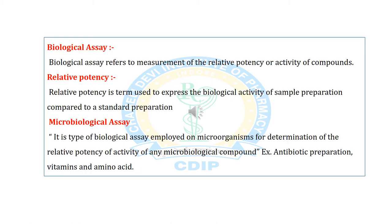Before discussing microbial assay, we first have to discuss what is biological assay, relative potency, and microbial assay. The biological assay refers to measurement of the relative potency or activity of compounds, while relative potency is a term used to express the biological activity of a sample preparation compared to a standard preparation.